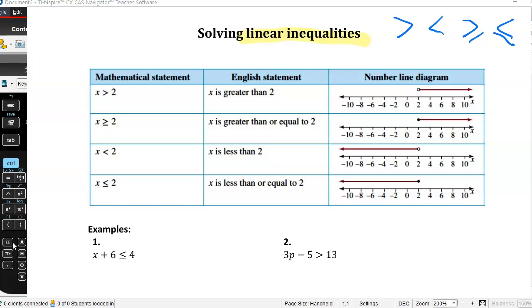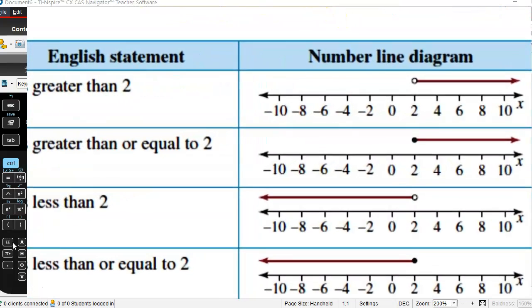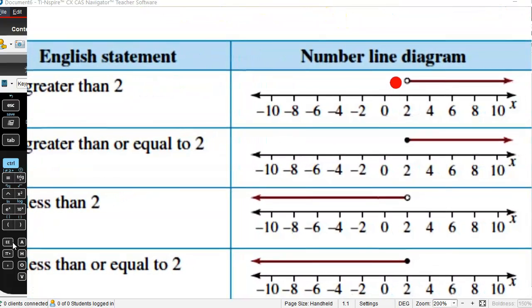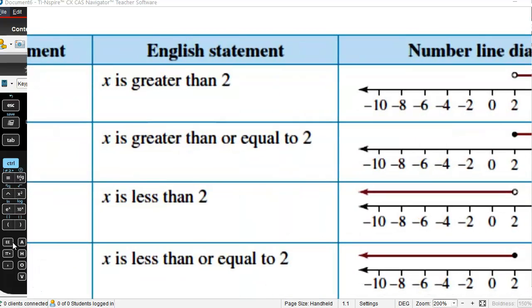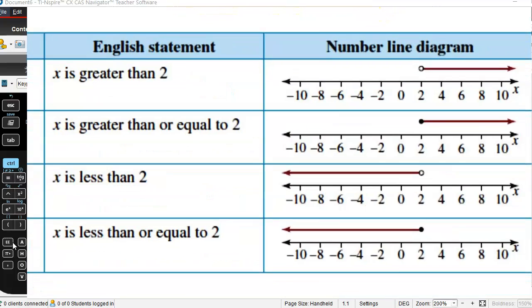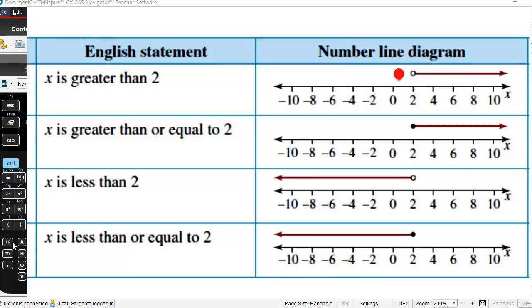You can see here I've taken a clipping from the textbook where we have x is greater than 2. How do we represent that on a diagram? We've got that open circle. I'll zoom it up even more. Why is it open? Because it's greater than 2. It doesn't actually include the 2.